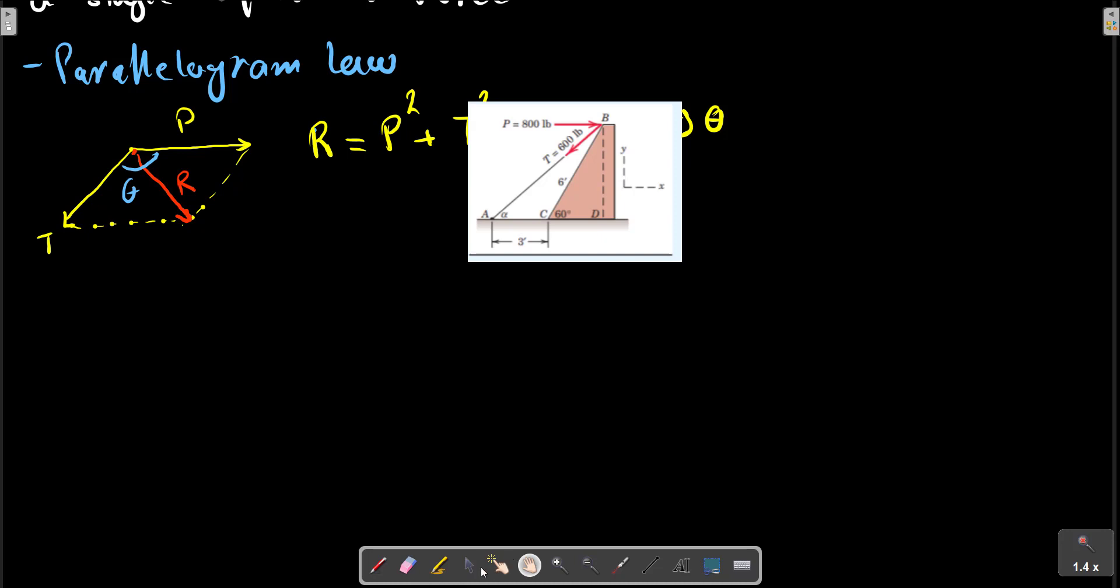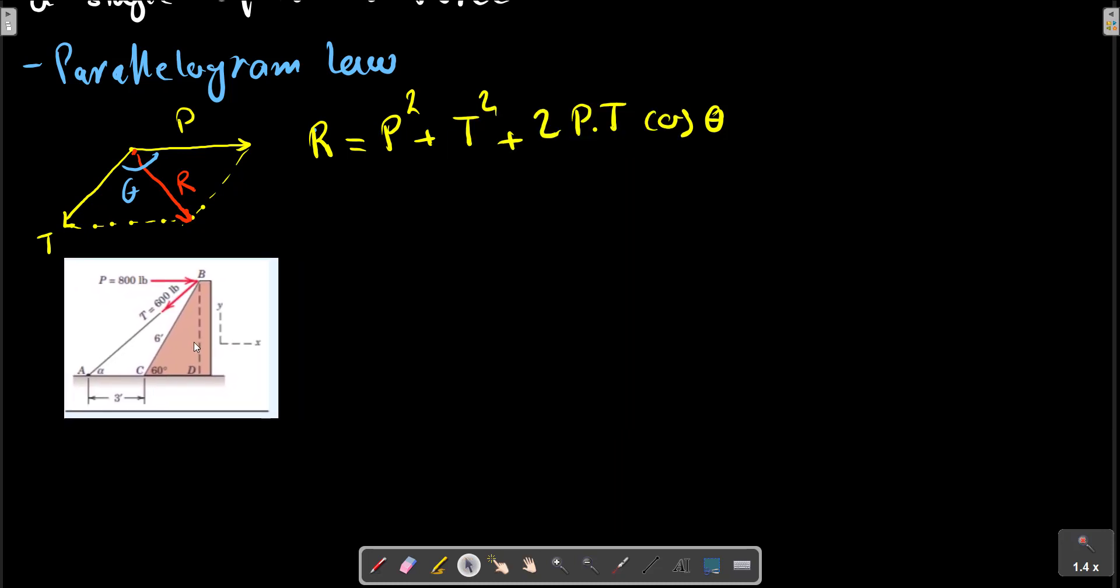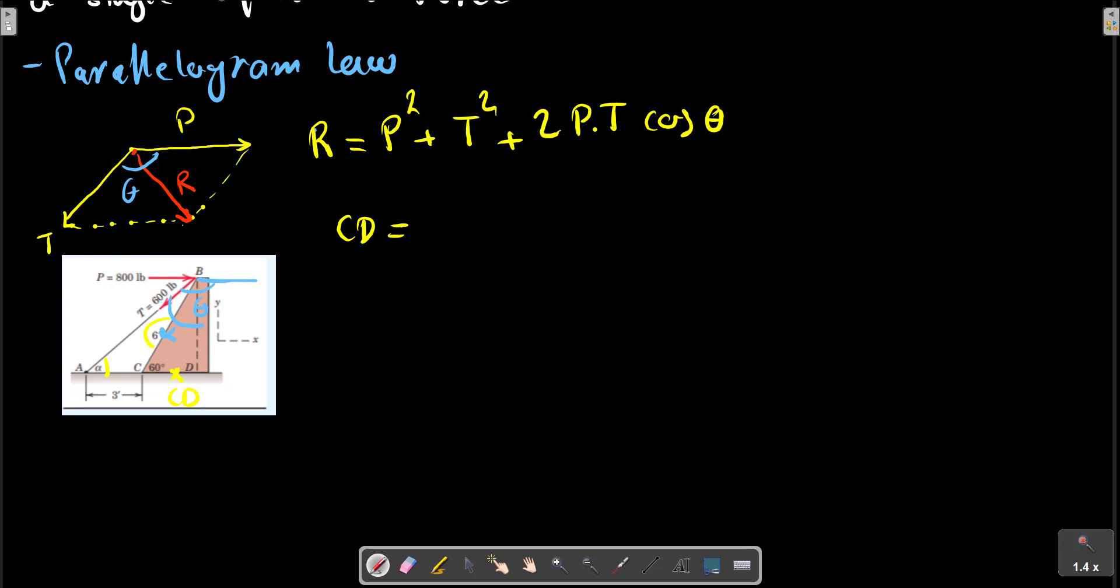Consider this picture again. This angle is theta. So if we calculate this angle first, we can obtain theta. At first we should calculate alpha. At this distance, we can see D is 6 inch multiplied by cos 60.